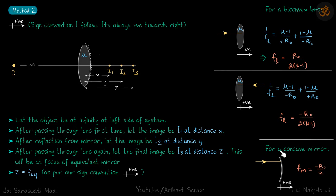For a concave mirror, the focal length is towards the left. We know its value is r0/2, and with our sign convention f of this mirror = −r0/2.